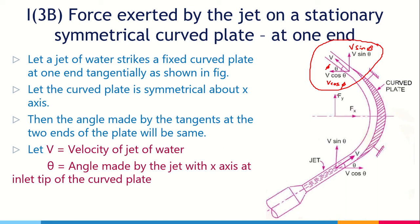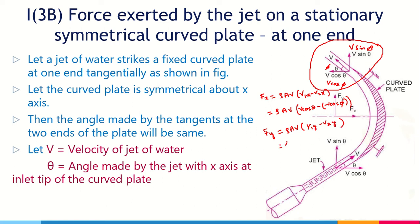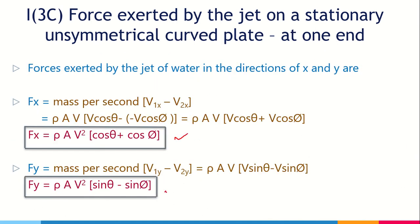For the unsymmetrical curved plate, the FX formula becomes: FX = ρAV × (V cosθ − (−V cosφ)) = ρAV²(cosθ + cosφ). For FY: FY = ρAV × (V sinθ − V sinφ) = ρAV²(sinθ − sinφ). These formulas are straightforward once you understand the symmetrical case first.